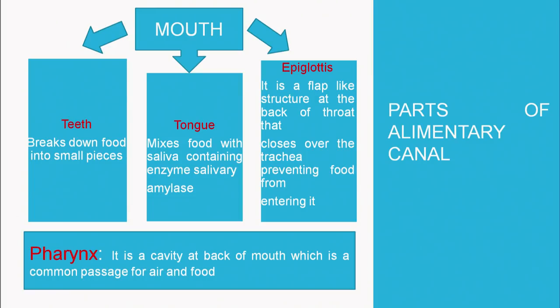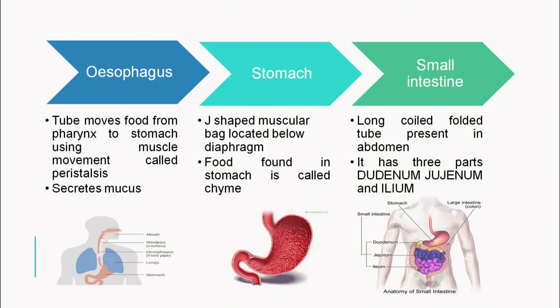After the mouth comes the pharynx, a common passage for air and food. After the pharynx is the esophagus — a tube which moves food from the pharynx to the stomach using muscle movement called peristalsis. It also secretes mucus, a substance which protects the inner lining of the esophagus, stomach and small intestine.